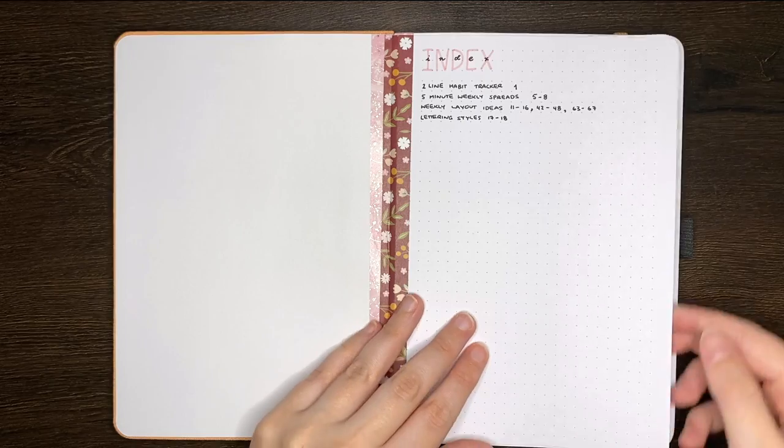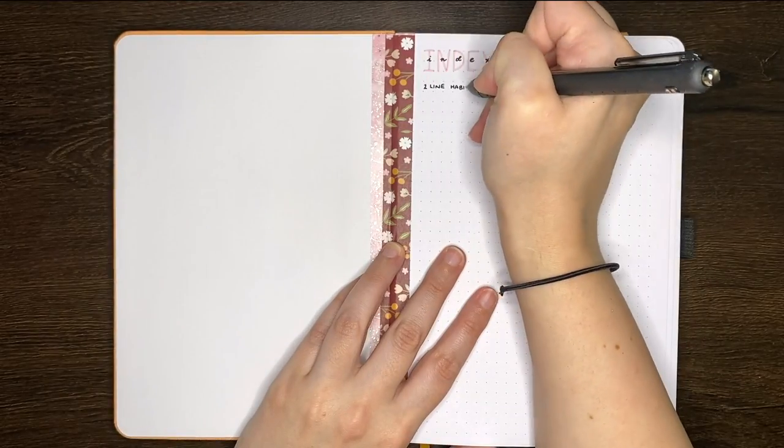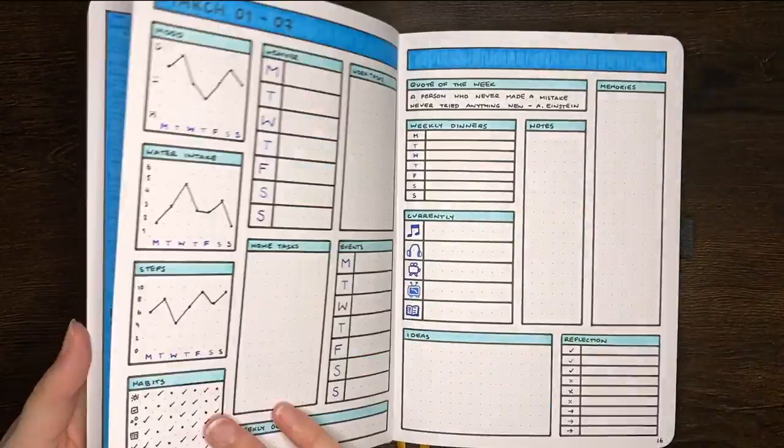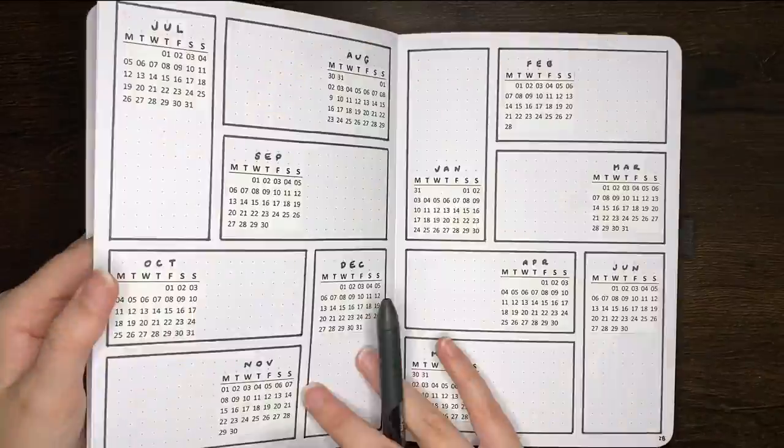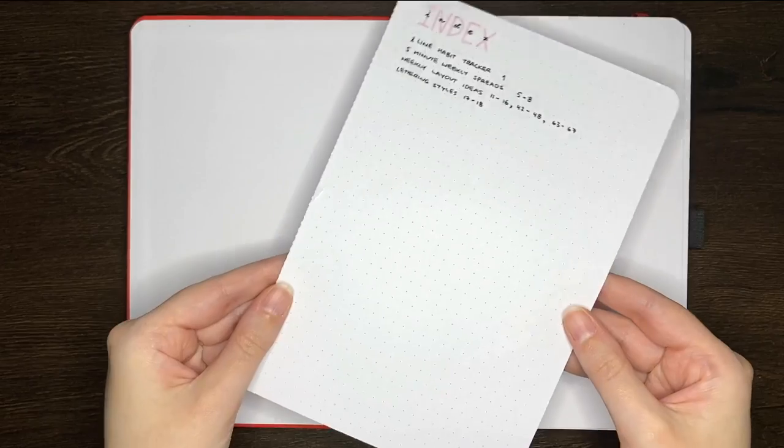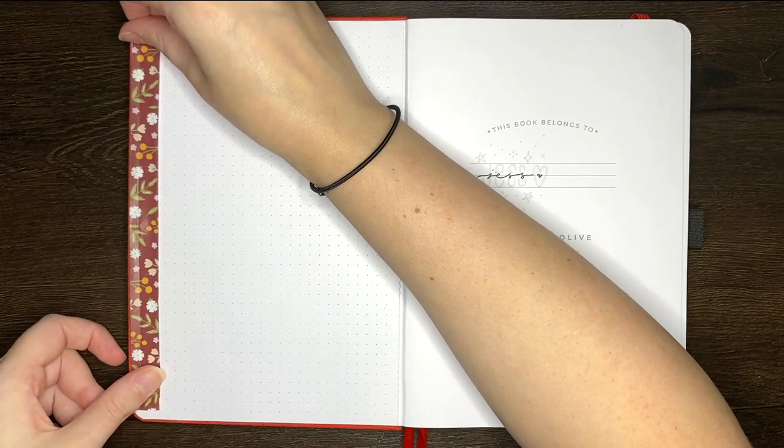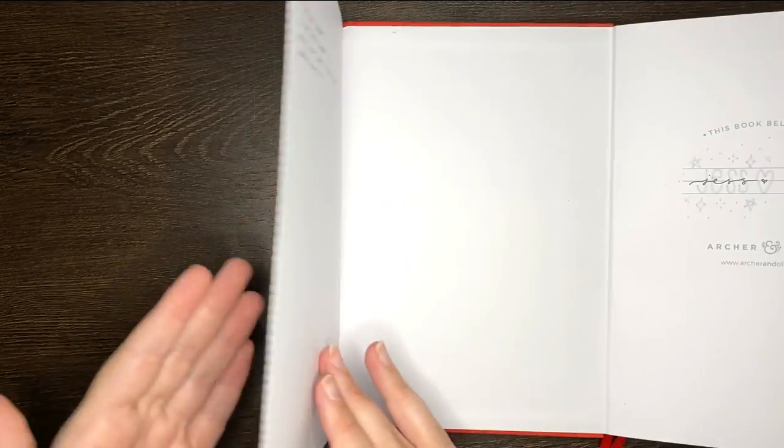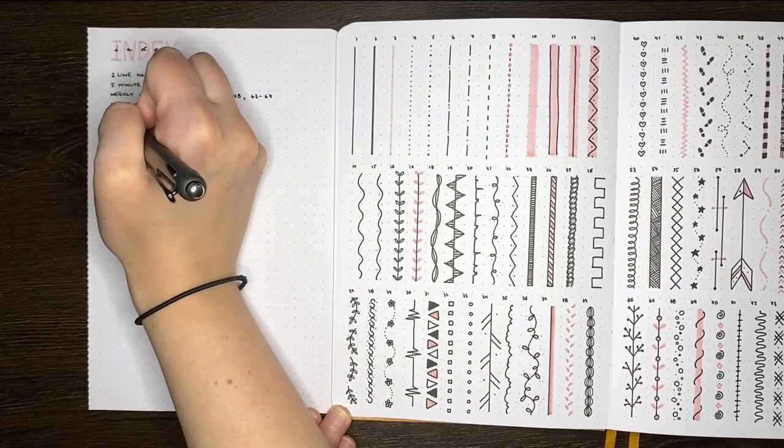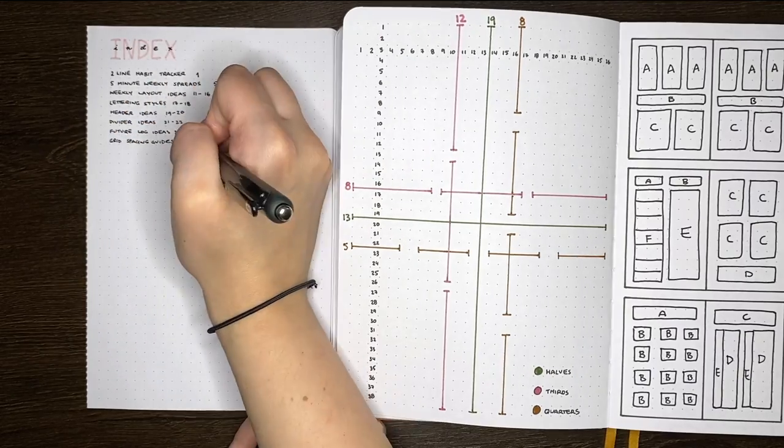Another tip for making your index easier to use is making a flip out or detachable index. When it comes to referring to or populating your index, it can be kind of a pain having to flip back and forth between the index pages and whatever collections you're actually wanting to work on. Flip out indexes can help here, in that you can see them from any page in your journal. To make one of these, you just need to write your index on a separate piece of paper and then attach it into the front cover of your journal along one side, such that it can be flipped out to the left to see your index entries. Detachable indexes are similarly done on a separate piece of paper, but can either be stored in the back pocket of your notebook or washi taped into the front cover.